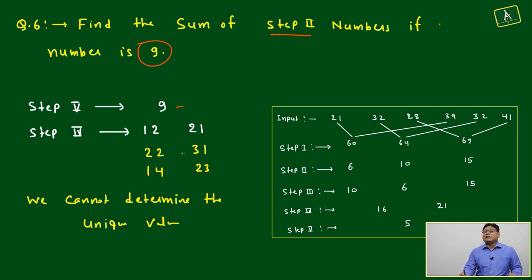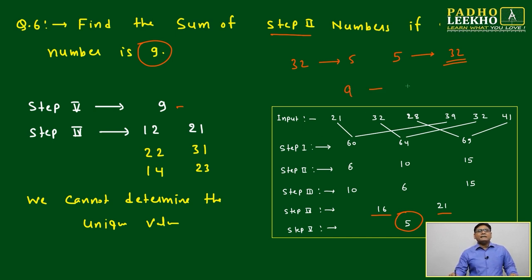Now again, same concept I discussed just 5 minutes before. If number is given 32, then sum of digits is 5 fixed. But if 5 is given, you cannot say only 32 is possible. Similar way here, if numbers are given 16 and 21, we know 5 is the difference. But if difference is given 9, how can we say the numbers are 21 and 12 only? Or is it 22 and 31 only? We are not sure.